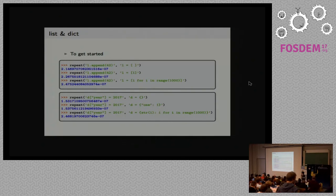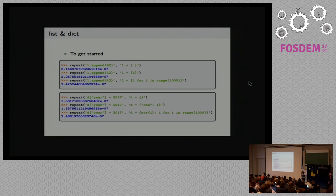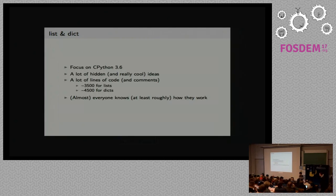So first, if you take a look at this tiny, bad, and actually not real life example, you can see that whether you want to add an item to a list that has zero elements, one element, a thousand elements, the time it takes to add a new element is quite constant. The same goes for dictionaries. So we'll focus on how CPython does that.